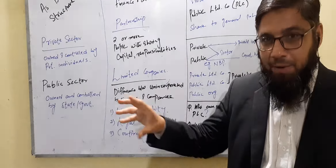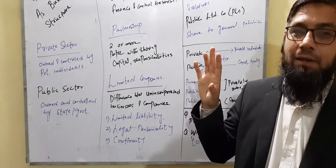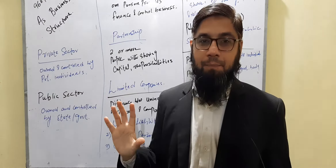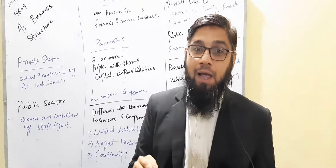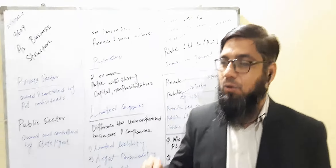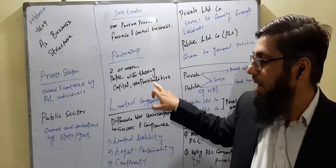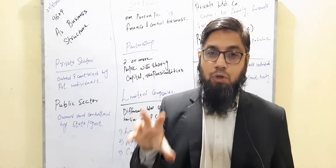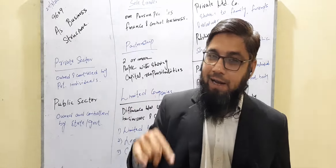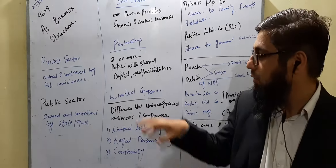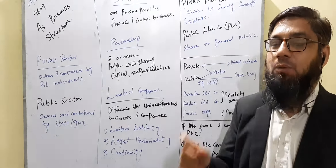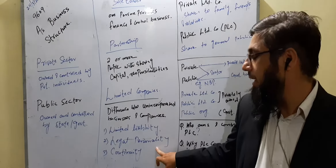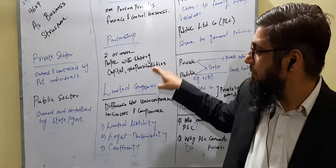Limited liability means that you are liable only to lose the amount you have invested in the company. Unlimited liability means that if you have invested in a sole trader or partnership and the money is lost, creditors can force you to pay the debt by selling your own personal possessions. So limited liability limits your responsibility to whatever money you invested.